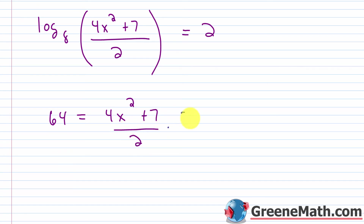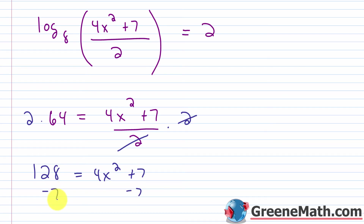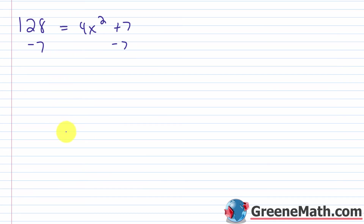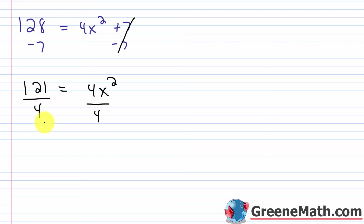Let's solve this equation. I multiply both sides by 2 to clear the denominator — that cancels — and 2 times 64 is 128. So 128 equals 4x squared plus 7. I subtract 7 from each side: 128 minus 7 is 121, so 121 is equal to 4x squared. Dividing both sides by 4, and since 121 is 11 times 11 it won't simplify further, I get 121 over 4 is equal to x squared.